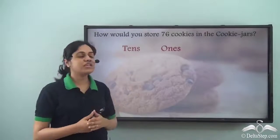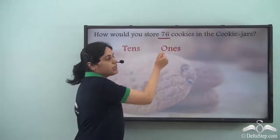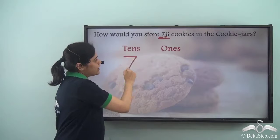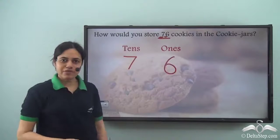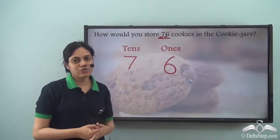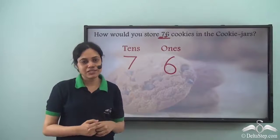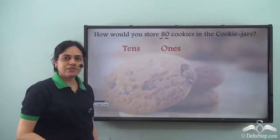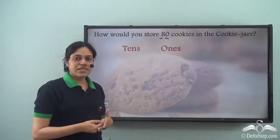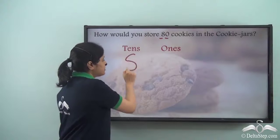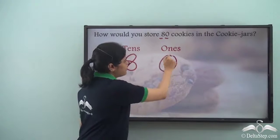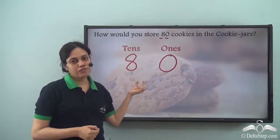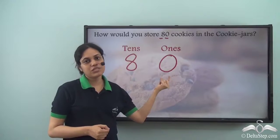How would you store seventy-six cookies in the cookie jars? Seventy-six means seven tens and six ones, so seven will go in the tens place and six will go in the ones place — that is how we can store seventy-six cookies. How would you store eighty cookies? Eighty — '8, 0' — stands for eight tens and zero ones. So eight will go in the tens place and zero will go in the ones place. The first digit stands for tens place and the second digit, zero, stands for ones place.